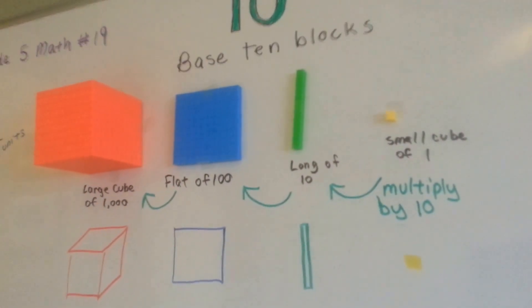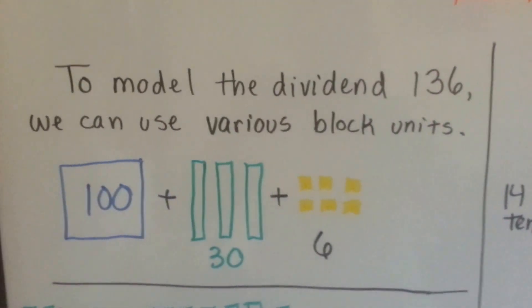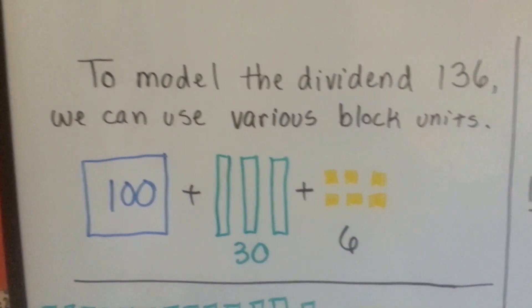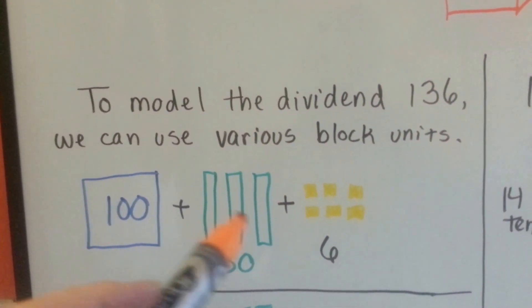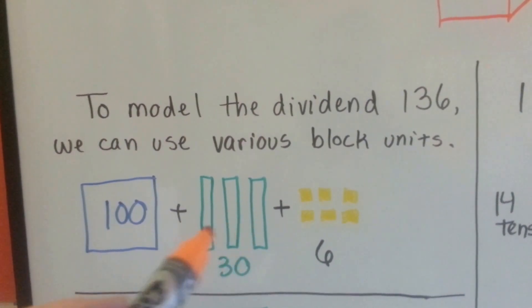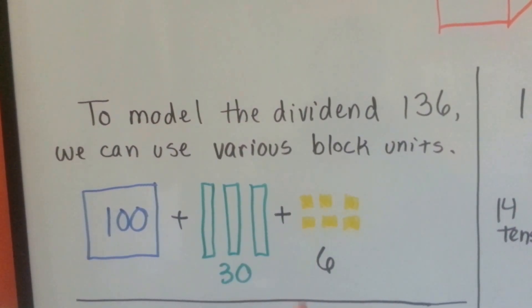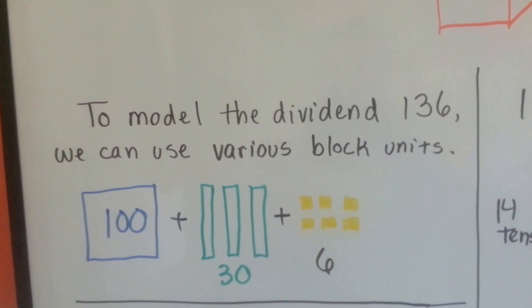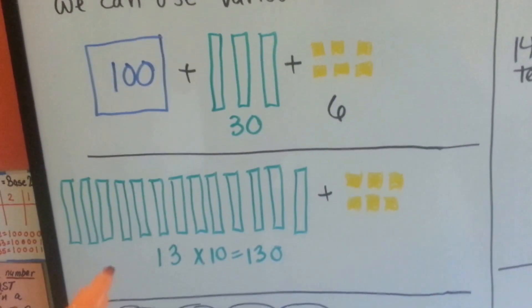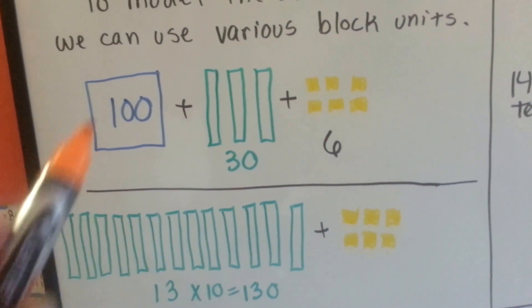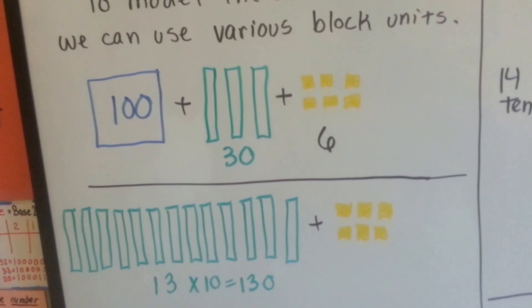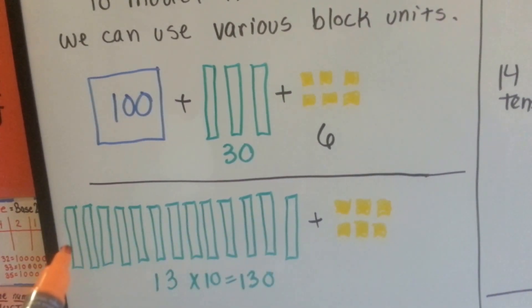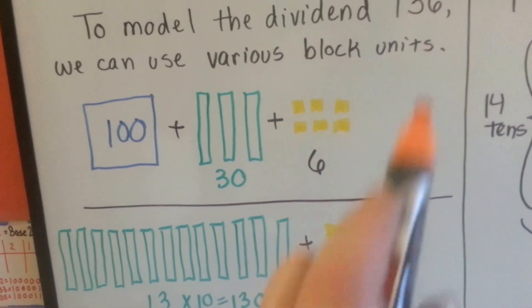To model the dividend 136, we can use various block units. We can use a 100 flat with three long tens to make 30, and then six single ones. We can also do 13 tens — break the 100 into tens, giving us 10 tens, and then have six ones, to represent our dividend of 136.